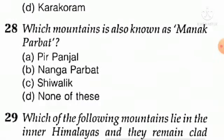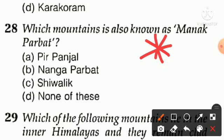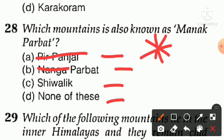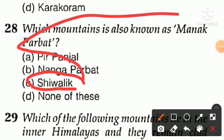Question number twenty-eight — a very important question: which mountain is also known as 'Mank Parbat'? Option A — Peer Panjal, option B — Nanga Parbat, option C — Shivalik, option D — none of the above. Peer Panjal is not the answer, Nanga Parbat is not the answer, none of these is not the answer. The Shivalik range's other name is 'Mank Parbat.' Remember: Shivalik is also called Mank Parbat.